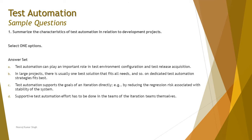Option B: in large projects there is usually one best solution that fits all needs and a dedicated test automation strategy fits best. This is wrong — the opposite is actually true. Strategies are always defined first, and then the best solution for test automation is determined to follow that strategy.